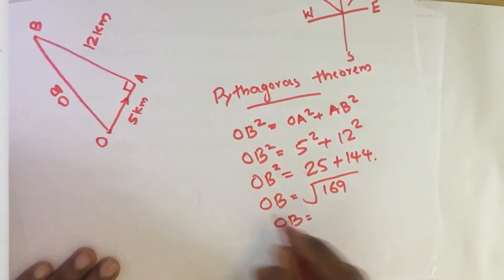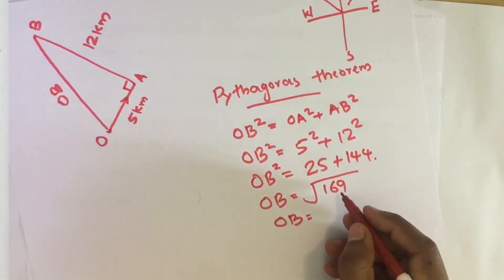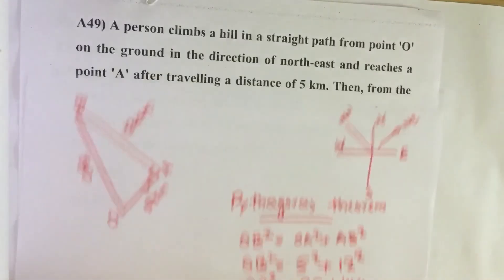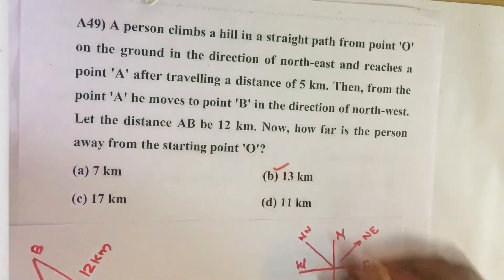OB equals, it is a distance, so we take the positive value of the root. It is 13 km. Our answer is option B, 13 km.